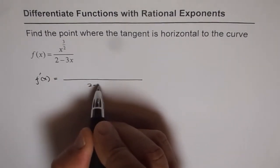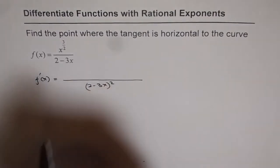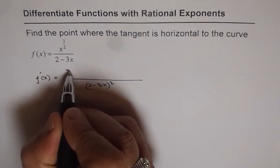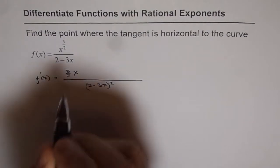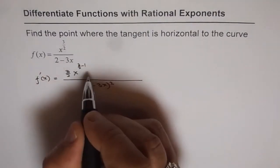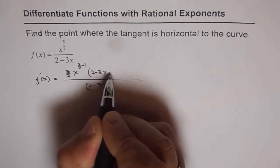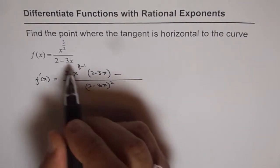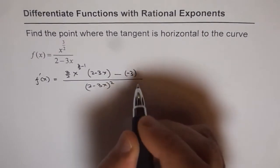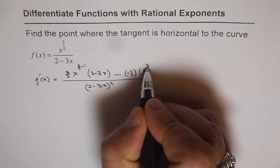The denominator will be 2 minus 3x whole squared. In the numerator we have the derivative of the first function, which is 3 over 2 times x to the power of 3 over 2 minus 1, times 2 minus 3x, minus the derivative of the second function which is minus 3, times x to the power of 3 over 2.